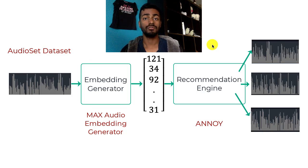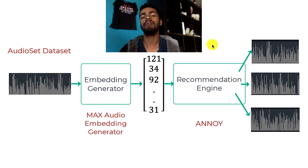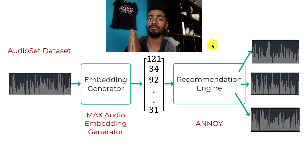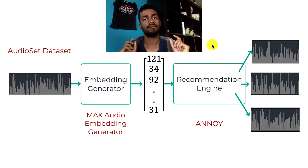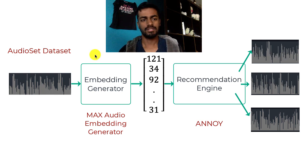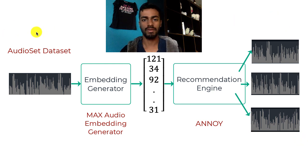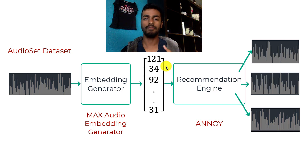Hello everyone. Welcome to another episode — a special episode today, because we are going to walk through how to build from inception to actual implementation a music generator, a music recommendation system. First, we're going to start with a proof of concept, just a little overview of what we're going to be doing, followed by getting into each of these individual components separately. It's going to be a long video, but it's going to be fun, so just keep following along.